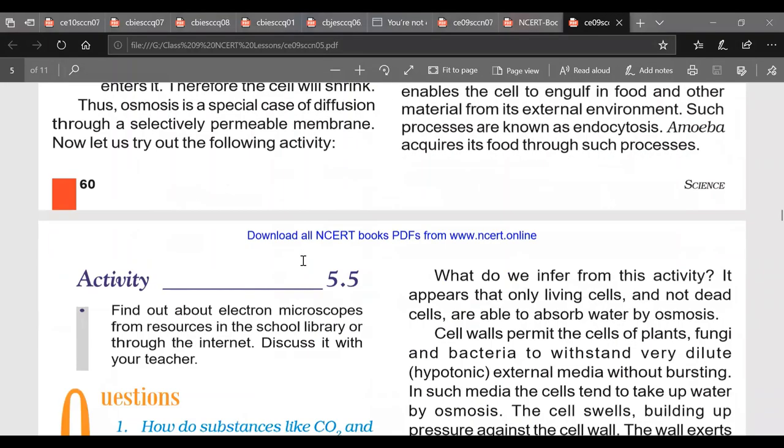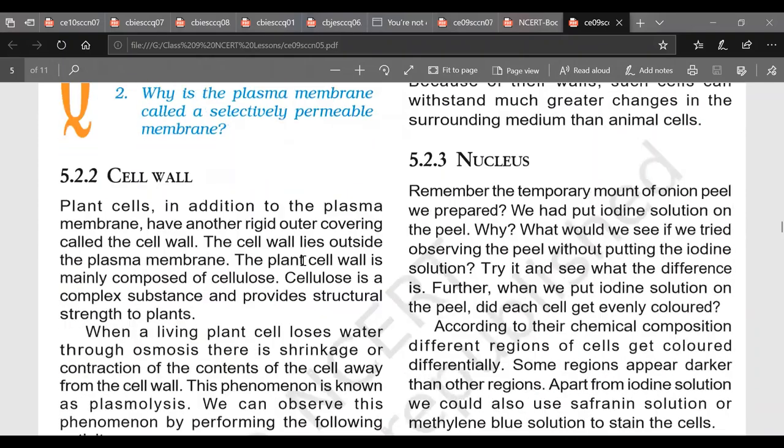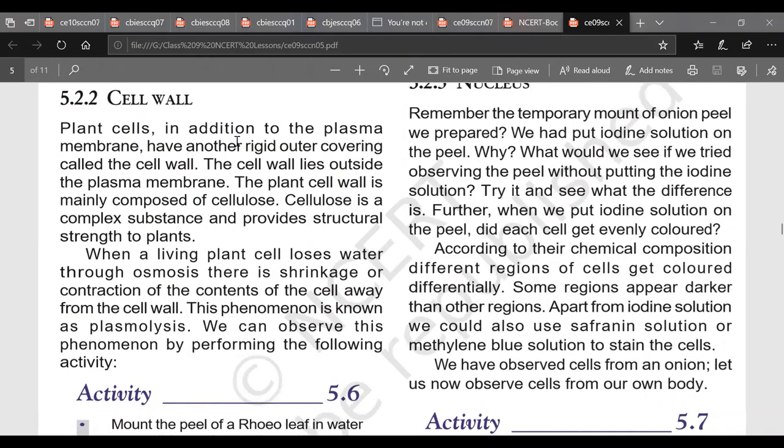Now comes cell wall. Plant cells in addition to plasma membrane have another rigid outer covering called cell wall. Cell wall lies outside plasma membrane. So this is the second point. Now plant cell is mainly composed of cellulose. Cellulose is a polymer. Cellulose is a polymer of glucose. Large number of glucose units, they combine together to form cellulose and cellulose forms cell wall. It's a complex substance and what is the function of cellulose? It provides structural strength to the plants. Now this is very very important.